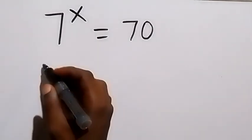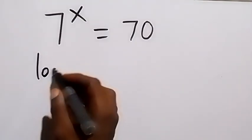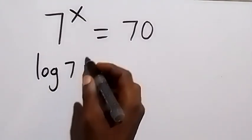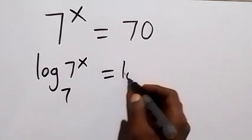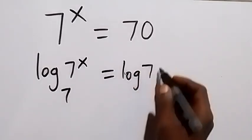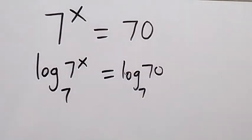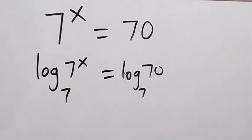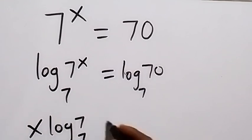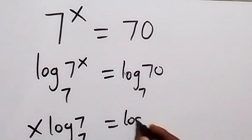Here, we can take log to base 7 on both sides. So log 7 raised to power x to base 7 equals to log 70 to base 7. And then from here, when we apply the power law of logarithm, we take x to the back here, and we have x log 7 to base 7 equals to log 70 to base 7.